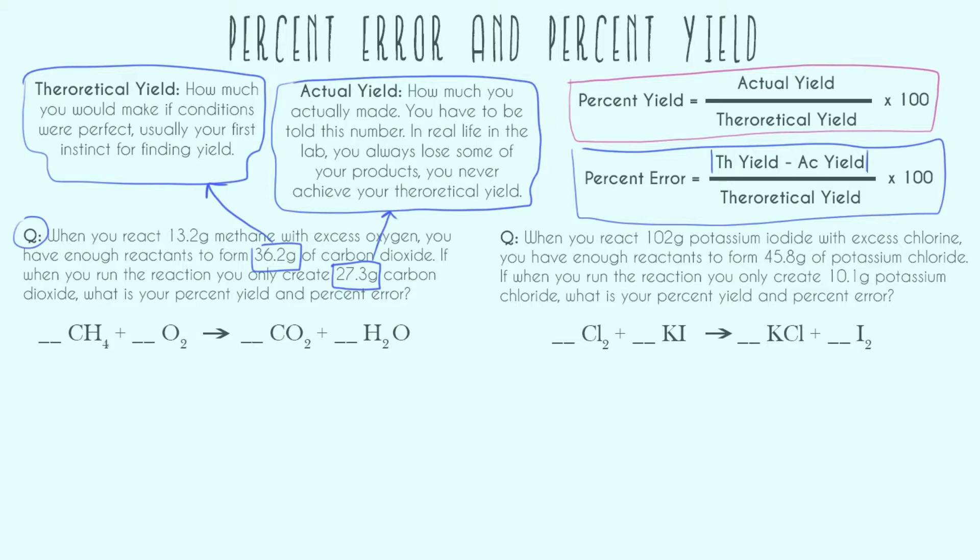So let's do percent yield first. So the numerator, the actual yield, the denominator, the theoretical yield. And we're going to divide those two and multiply by 100. And we end up with 75.4 for our percent yield. And let's just do a sig fig check. We have 1, 2, 3, 1, 2, 3. So we want our answer to have 1, 2, 3 sig figs. So that looks good.